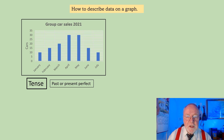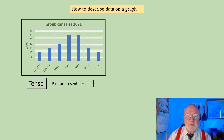For a current year, say like 2023, the year now, we could use the present perfect. And if you want to revise that, I'll leave a link below to my video on the present perfect.